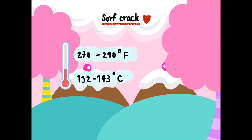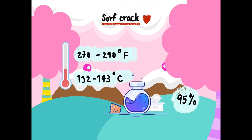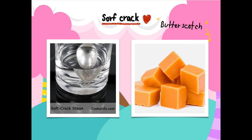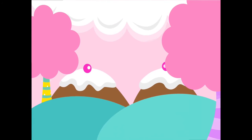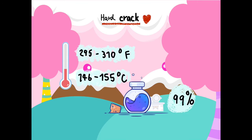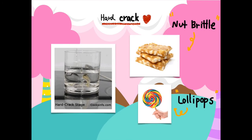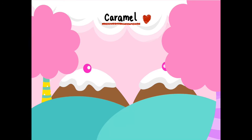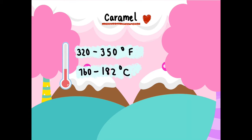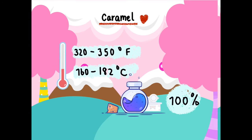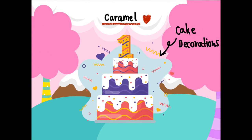At a soft crack sugar concentration of 95%, it is used to make butterscotch. At a hard crack sugar concentration of 99%, it is used to make lollipops and nut brittle. At a sugar concentration of 100%, it is used for coating nuts and decorations for cakes.